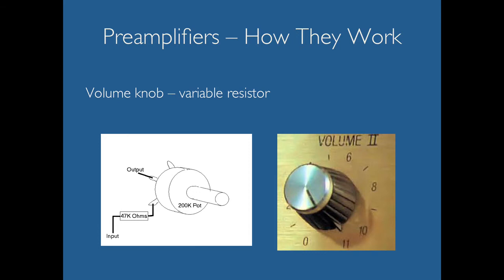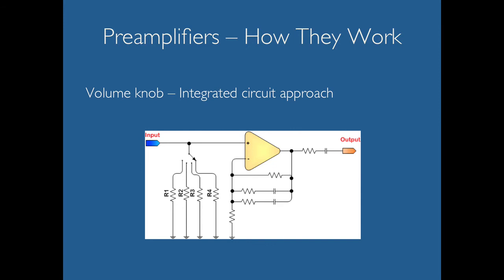The volume knob is the main centerpiece for most preamplifiers. Most of them utilize a variable resistor — changes in resistance affect the perceived output volume, and as you can see this knob goes up to 11, thank you Spinal Tap. The volume knob can also utilize an integrated circuit approach, which doesn't create as smooth an increase and decrease in sound, but it is a much cheaper way of creating volume changes. Based on the integrated circuit it's going to R1, R2, R3, or R4, which affects the amount of resistance and therefore the output.